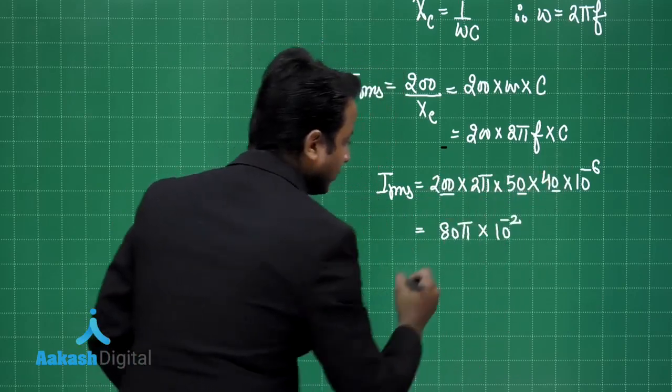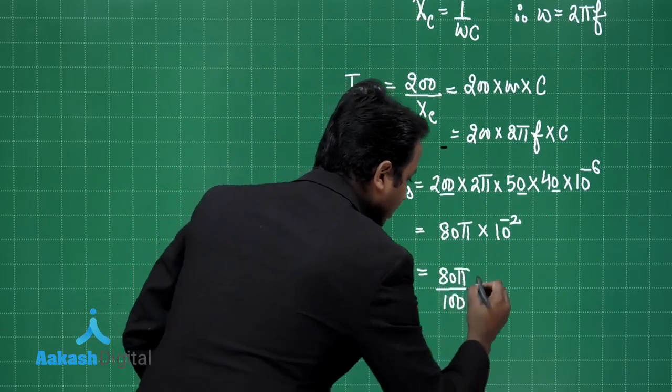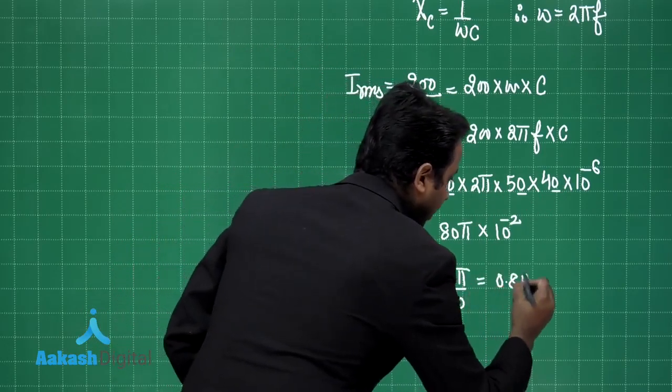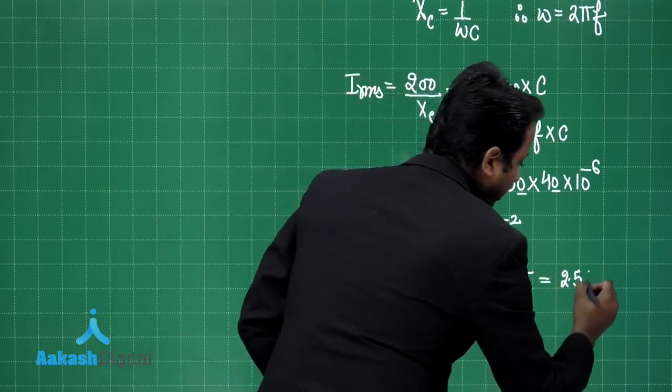So, this is 80 pi by 100. So, this is 0.8 of pi and if you put the value of pi you will get 2.5 of ampere.